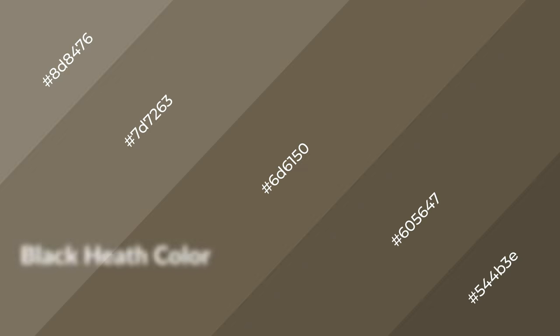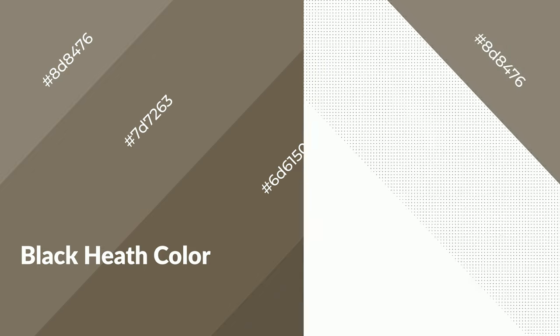To generate shades of a color, we add black to the color. Shades are used in patterns, 3D effects, and layers, and they create depth and drama. Black heath is a warm color and it emits cozier and active emotions. Warm colors are symbols of warmth, fire, and heat.